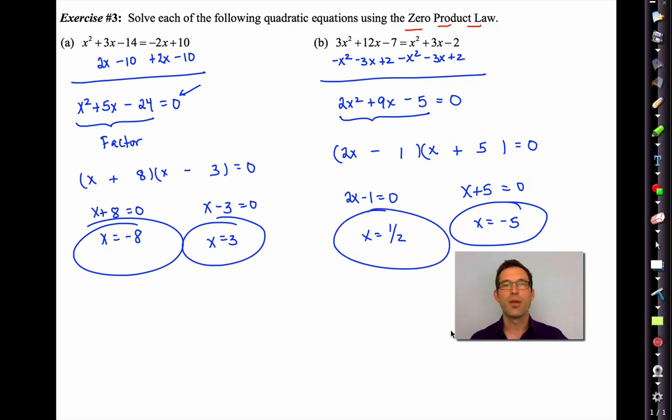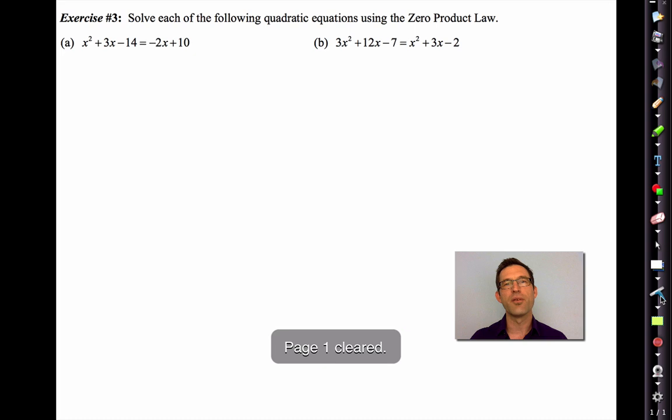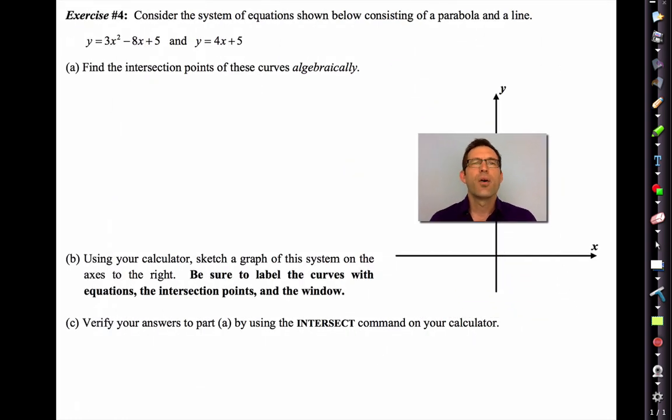And that's it. So the zero product law requires us to have the equation equal to zero and to have it written in product form. If either one of those two isn't the case, the zero product law cannot be used. Pause the video and take a moment to write down anything you need to. I'm going to clear out the text. Then we'll go on and do a little bit of applied or applications of the zero product law.